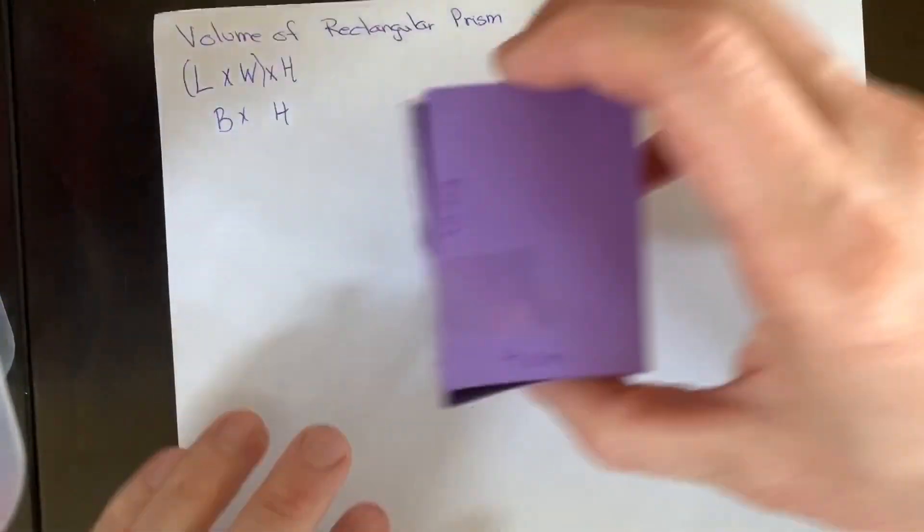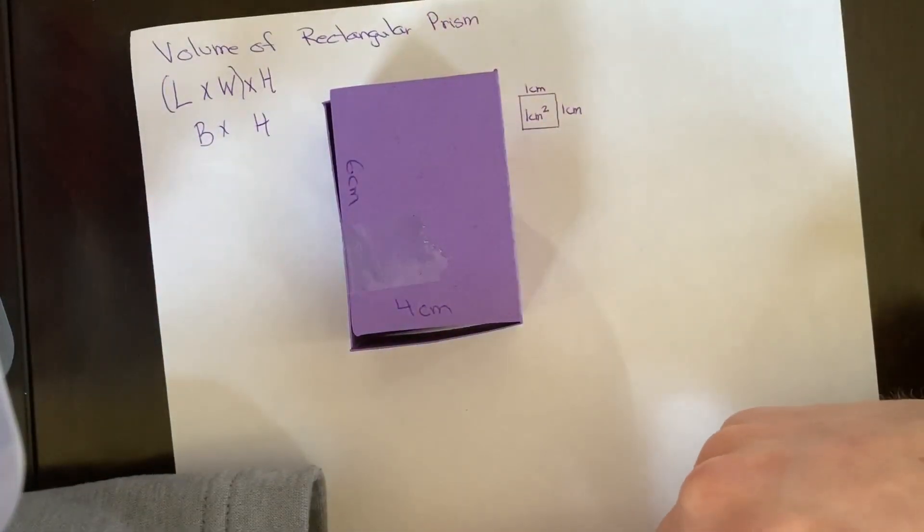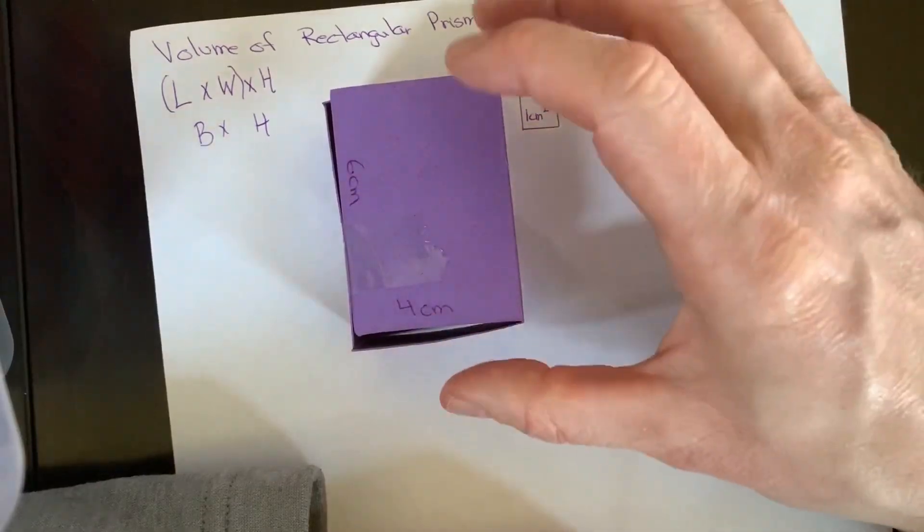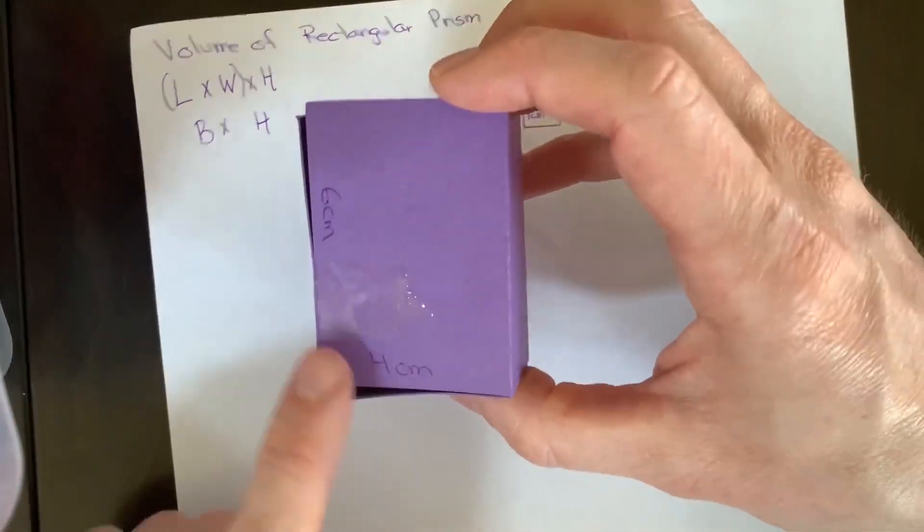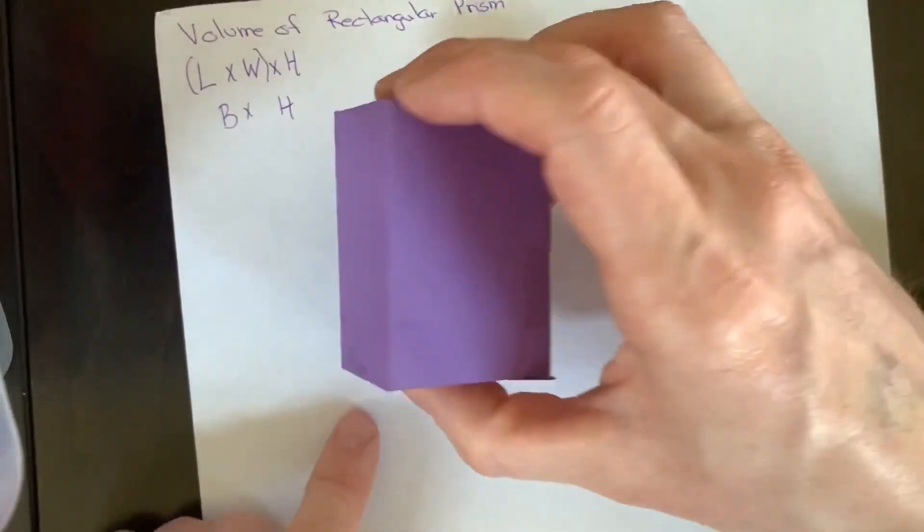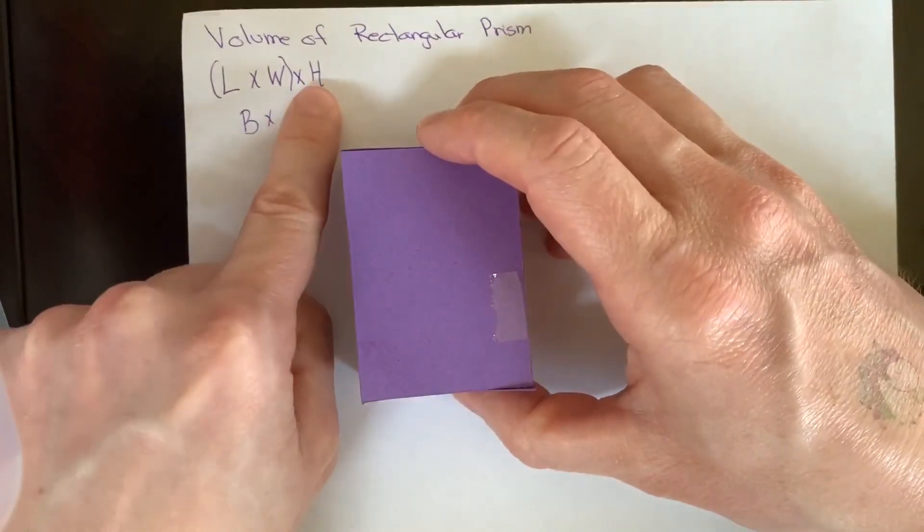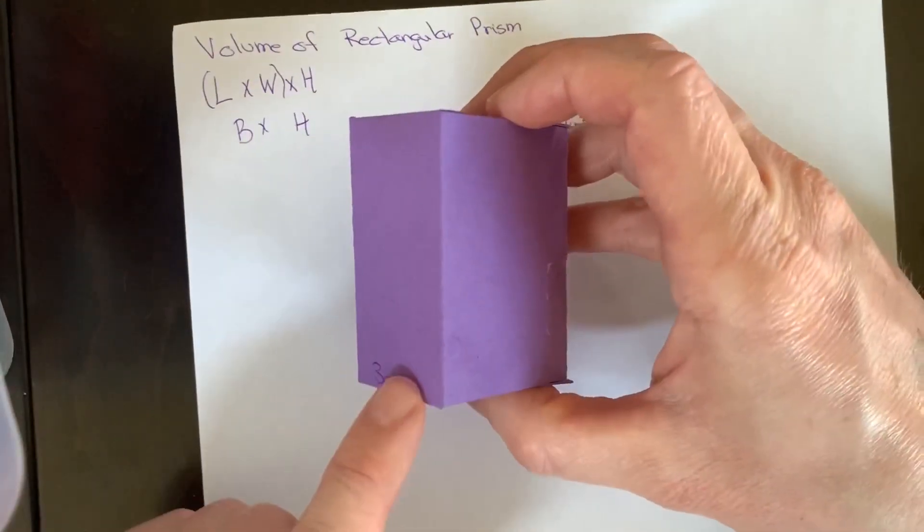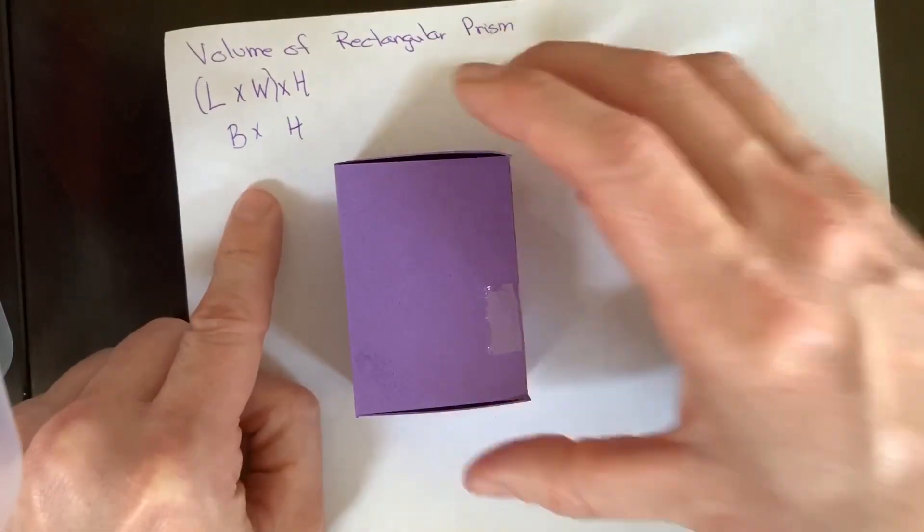So right now I'm just going to calculate the surface area of this right here. You can see that I've got them labeled six by four. So my base is going to be 24 centimeters squared. And now I need to times it by the height. My height is three. So I do 24 times three.